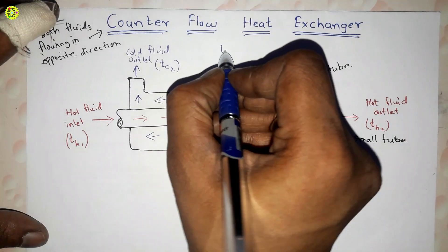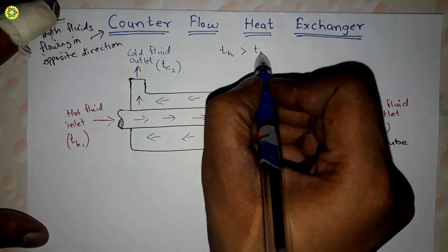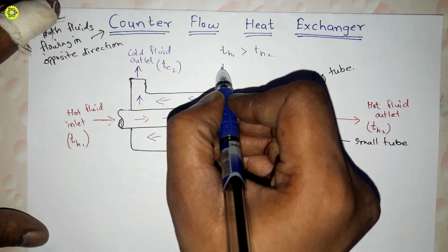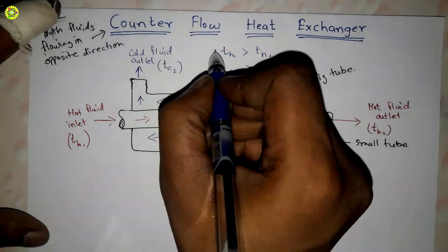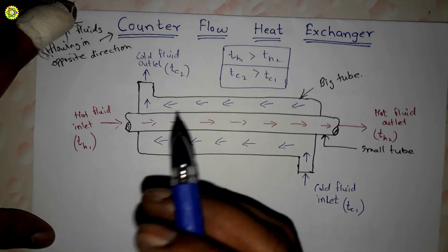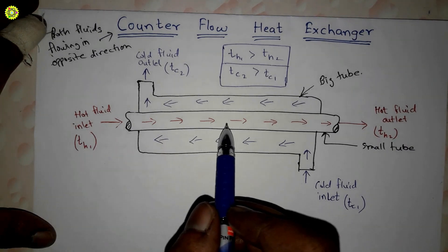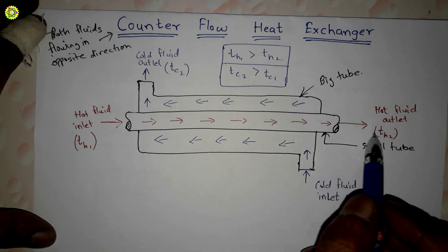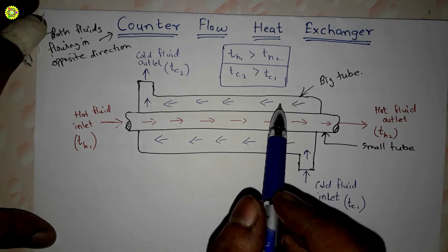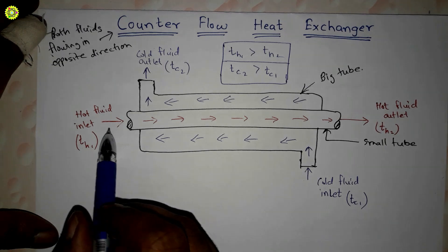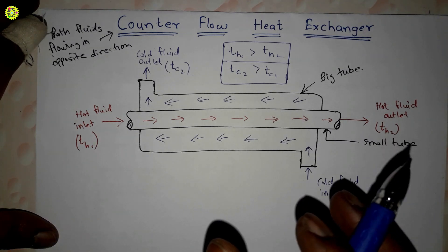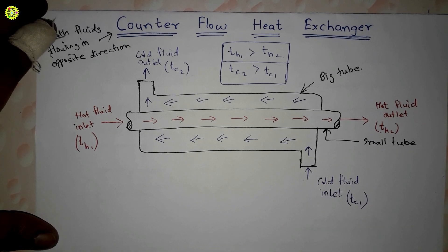In this counter flow heat exchanger, th1 is greater than th2, and tc2 is always greater than tc1. This is because both fluids exchange heat with each other — as the hot fluid flows inside the small tube, it exchanges heat with the cold fluid flowing inside the big tube.